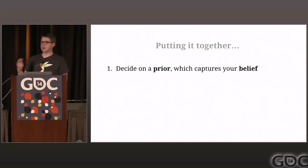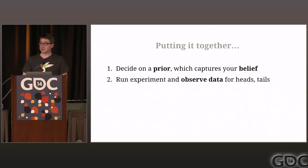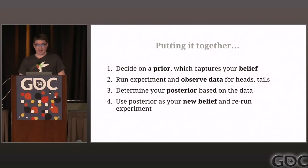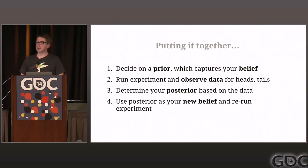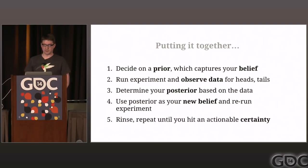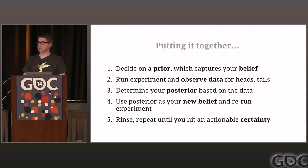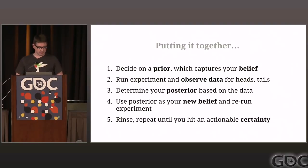Putting it together: we first decide on a prior that captures our belief about the coin's bias — a function with a certain shape. We run our experiment and observe some data for heads and tails. Based on that, we update our view of the posterior distribution. We feed it back in and keep going. At any point in time we have a new belief about how well our model represents the coin or the conversion rate. At some point you stop and say you've done enough — some conversion has been achieved or you see a result above a certain threshold.